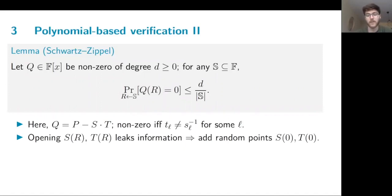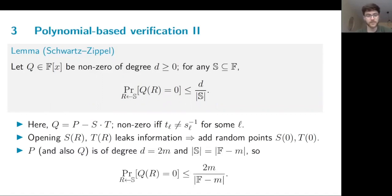One thing to note here is that opening these values of S and T at a random point will leak information because the polynomials are not randomized. So we do exactly this and we add an additional random point to prevent this leakage. So this is how we can bound our soundness for this part of the verification, by noting that P is of degree 2m. And therefore, we need to ensure that if we choose a field which is much larger than the number of gates in the circuit, then this soundness bound will tend to negligible.